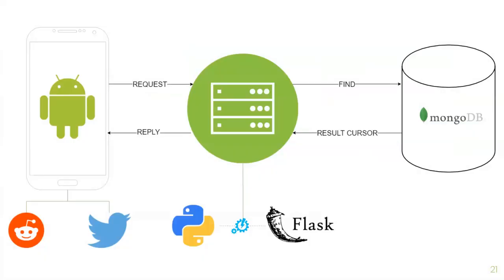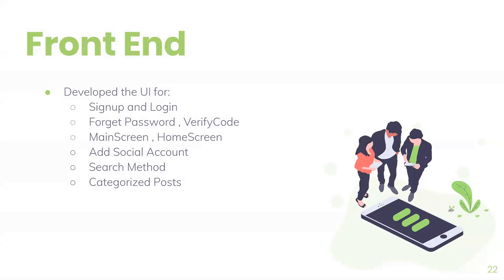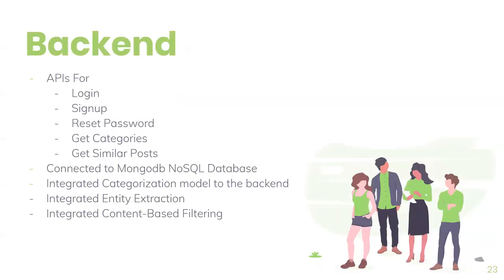For our mobile application, we built an Android app linking to Twitter and Reddit. The back end was built using the Python Flask library and MongoDB for the database, due to its NoSQL functionalities which help with data from multiple sources. For the front end, we developed the basic UI for signup, login, home screens, adding social accounts, a search method, and categorized posts. For the back end, we successfully integrated APIs for login, signup, reset, basic social media functionalities like commenting, search, get categories, get similar posts, and all machine learning models except entity resolution.